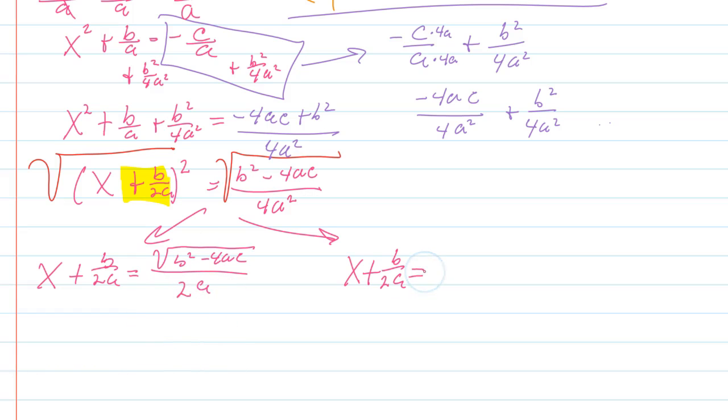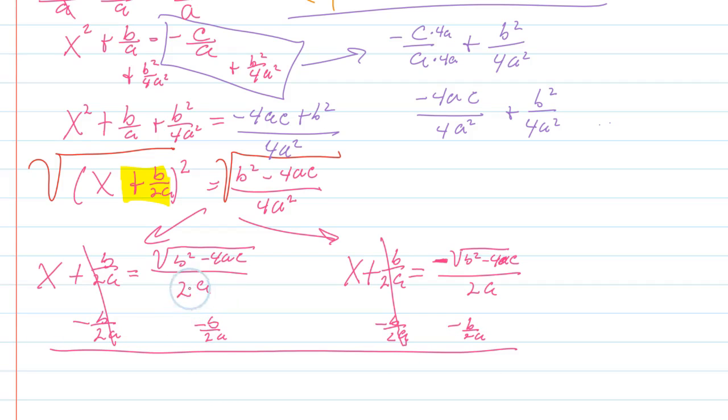I need to solve for x, so I'm subtracting that b/2a to the right hand side on both of them. I already have common denominators. I have a 2a there and a 2a there, so I can write it over one common denominator. x is equal to -b plus the square root of b² - 4ac all over 2a, and the negative version.